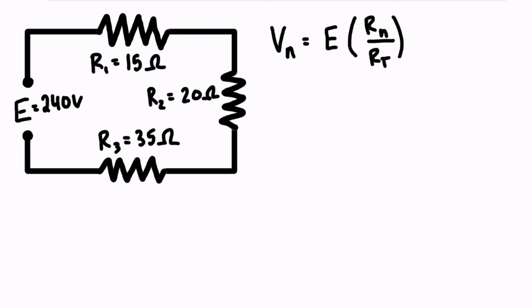So you do need to find the total resistance, and in this case RT is just equal to R1 plus R2 plus R3 because these are in series, and this works only in series. So we can figure this out. This is just equal to 15 ohms plus 20 ohms plus 35 ohms. So RT, the total resistance of the circuit, is equal to 70 ohms.